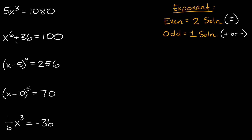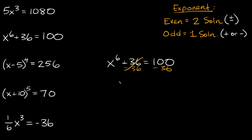Now let's go to the next one. This is x to the sixth plus 36 is equal to 100. Our exponent — remember, first thing you want to look at — is even, so that means we're going to have two solutions: a positive and a negative one. So here x to the sixth plus 36 is equal to 100. The first thing we can do is subtract 36 from both sides, and we get x to the sixth is equal to 64.